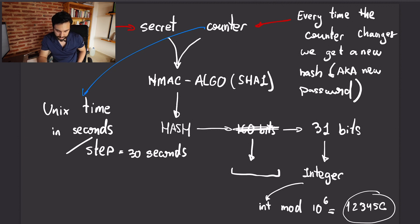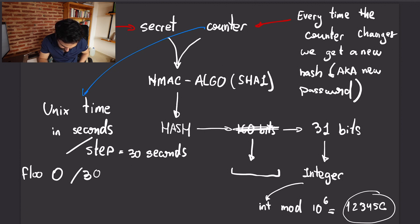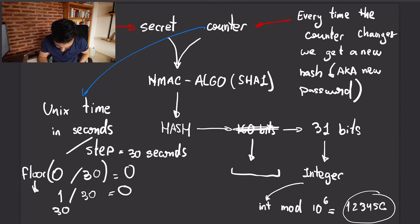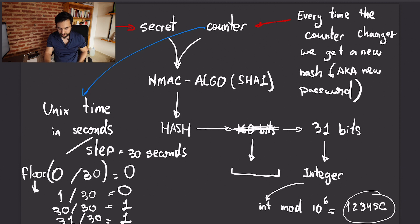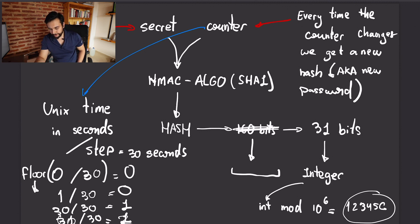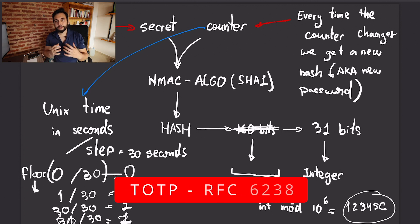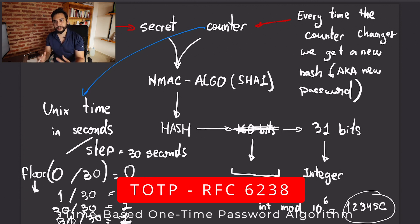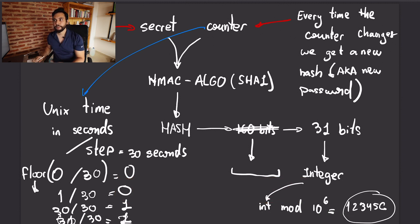For example: second 0 divided by 30 floored is 0; 1 divided by 30 floored is 0; 30 divided by 30 is 1; 31 divided by 30 floored is 1 — so at 60 this would be 2. You now have a counter that increments every 30 seconds, and we roughly agree on that. When you use time as the counter in HOTP, that is what TOTP is — time-based one-time password algorithm.